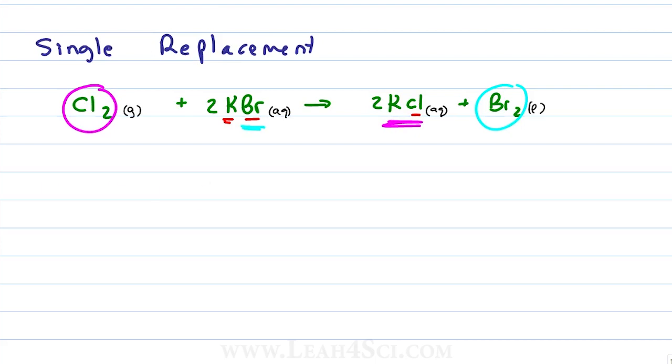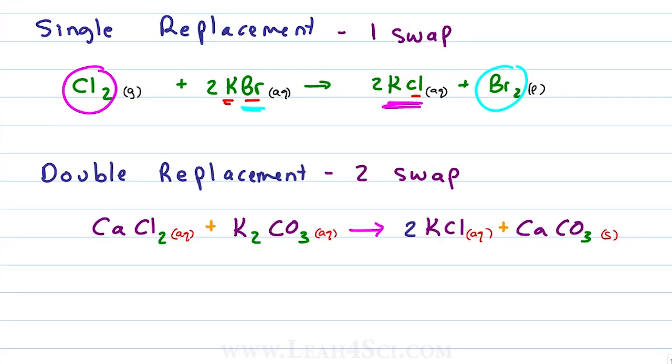This is very similar to the double replacement reaction but where the single replacement was one swap, the double replacement is a two swap reaction meaning each reactant is going to swap partners. This is what we saw in the precipitation reaction. The way to recognize a double replacement is to recognize that each group swapped partners. In the reactants, calcium is partnered with chlorine, in the product is partnered with carbonate. In the reactants, potassium is partnered with carbonate but in the product is partnered with chlorine. The double replacement is also called a metathesis reaction.